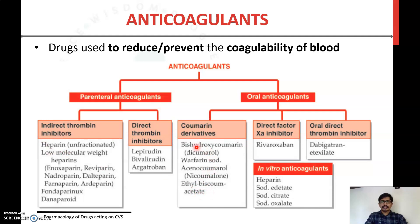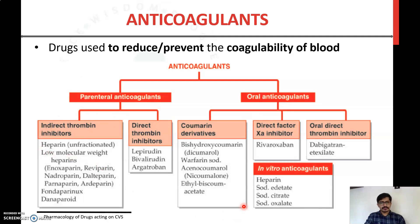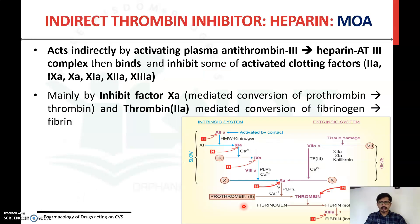Out of these, heparin and warfarin are very important from the examination point of view. There are also in vitro anticoagulants used outside the body for laboratory techniques such as blood counts — including heparin sodium, edetate, sodium citrate, and sodium oxalate. Oral anticoagulants have only in vivo action, but parenteral heparin can be used both inside and outside the body to prevent blood clotting.